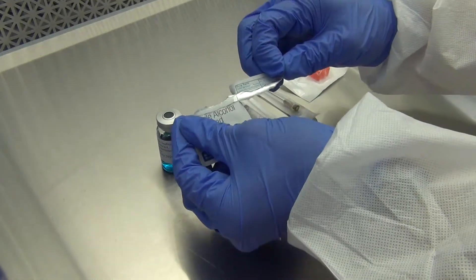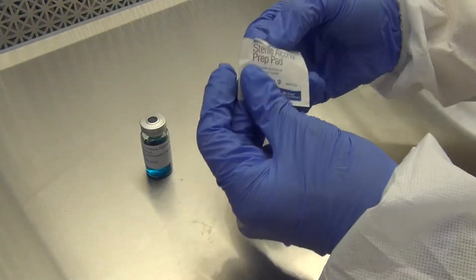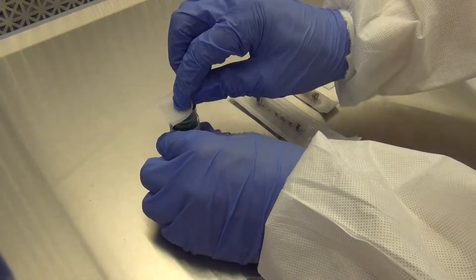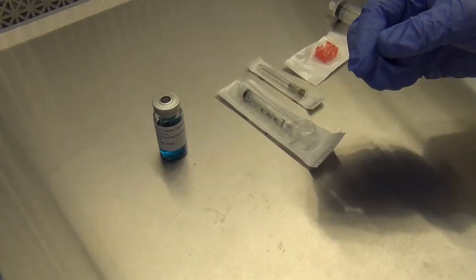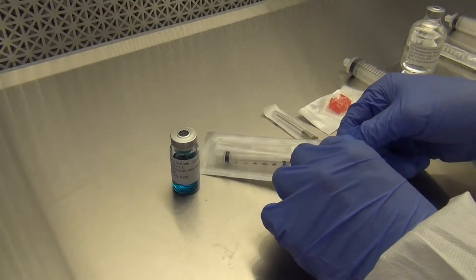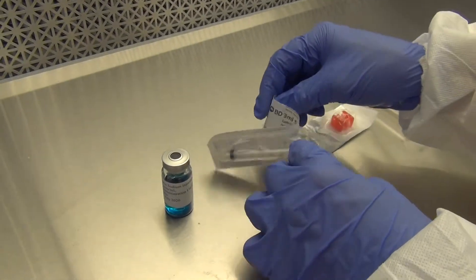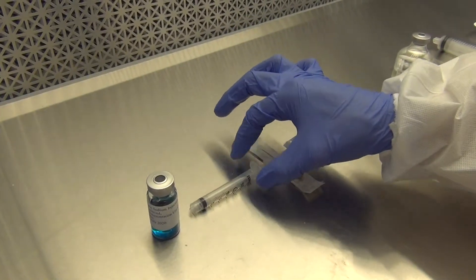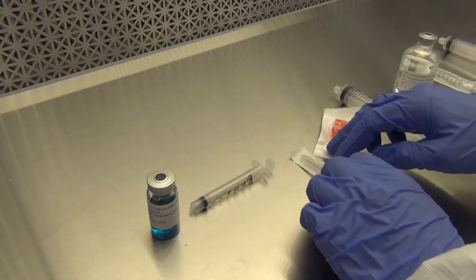Go ahead and take an alcohol wipe and swab the top of the heparin vial. Make sure you are working 6 inches in the hood at all times. Remove the 3 milliliter syringe and affix a sterile needle to the tip of the syringe. Try and be mindful about blocking first air.